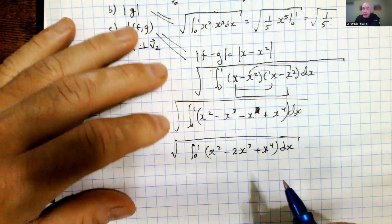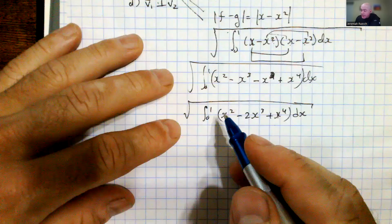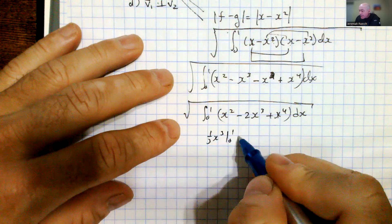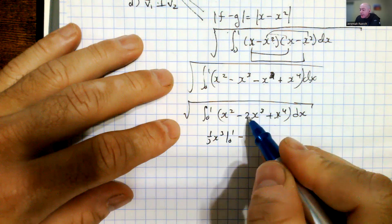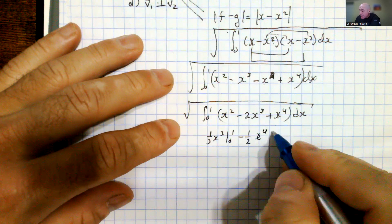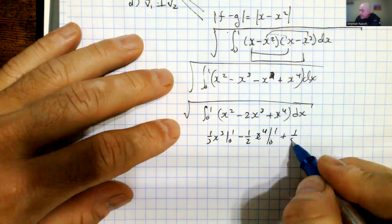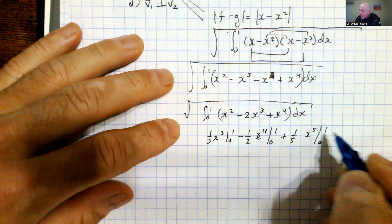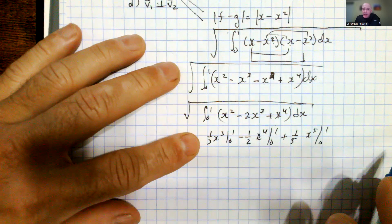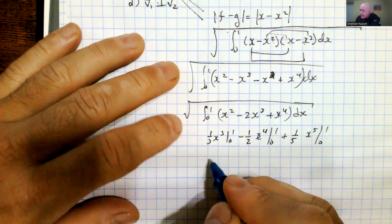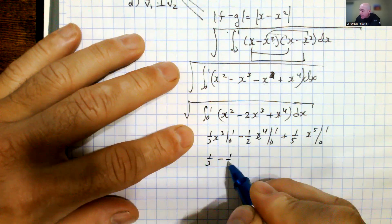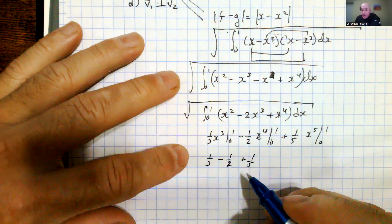Now I have terms to integrate using the power rule. This gives x cubed over 3, minus 2 over 4 which simplifies to minus 1/2 times x to the 4th, plus x to the 5th over 5, all evaluated from 0 to 1. Since the lower limit is 0, plugging in 1 gives the sum of fractions: 1/3 minus 1/2 plus 1/5.